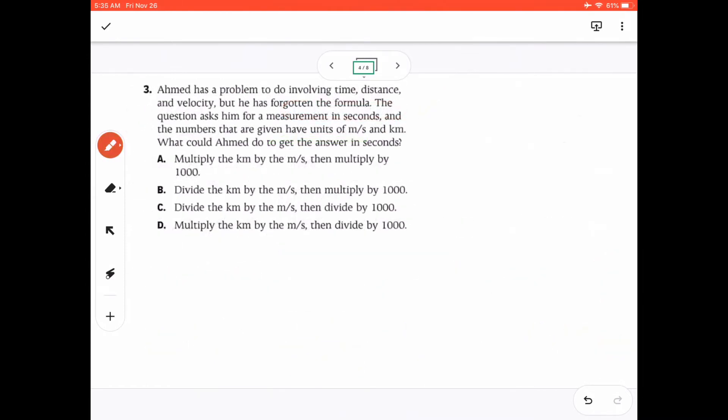Question 3. Ahmed has a problem to do involving time, distance, and velocity, but he has forgotten the formula. The question asks him for a measurement in seconds, and the numbers that are given have units of meter per second and kilometers. What could Ahmed do to get the answer in seconds? In this problem, we are required to find the time, but there are no numbers given. So Ahmed has forgotten the formula, but of course, you shouldn't have forgotten. Your formula for velocity, distance, and time, this is the equation, V is equal to D divided by T. And we are looking for T, so if we are going to rearrange this formula, T is equal to distance divided by velocity.